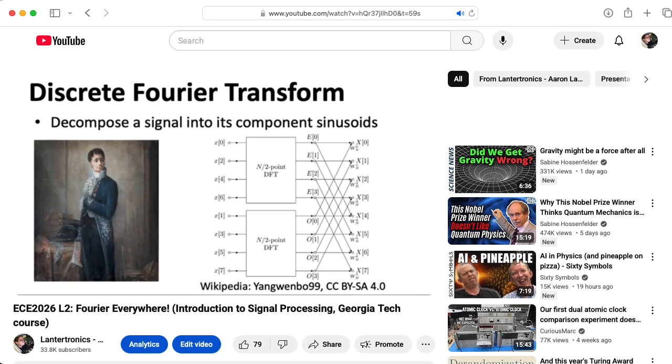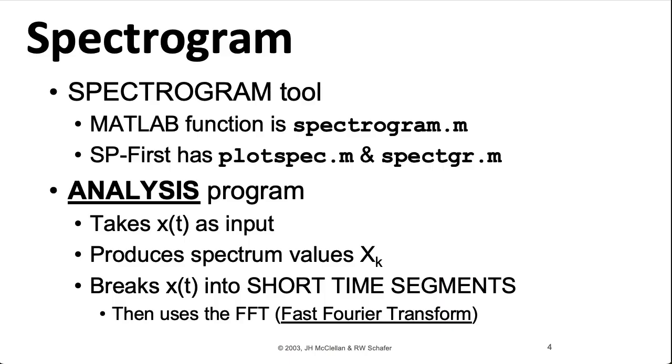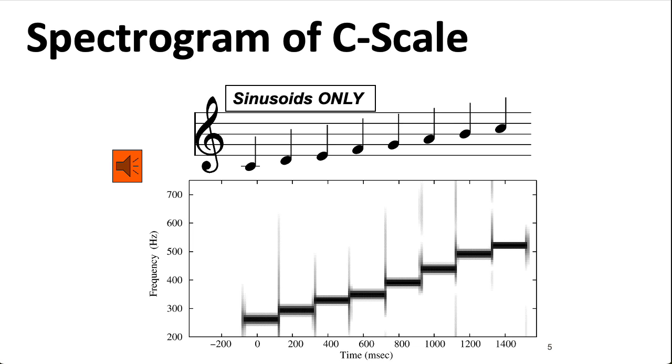Essentially, the spectrogram tool takes your signal in the time domain and splits it up into a bunch of short time segments, and then computes the Fast Fourier Transform for each of those segments to make a two-dimensional plot. Something like this. There's a lot of details associated with that that we'll talk about later in the course.